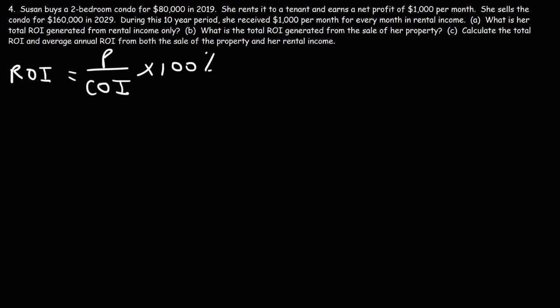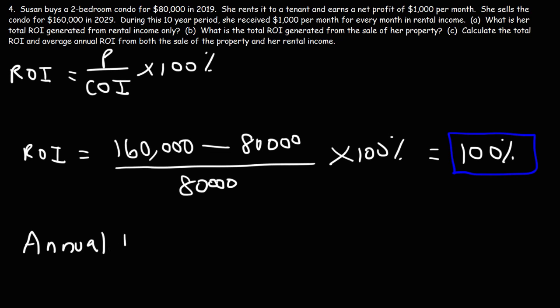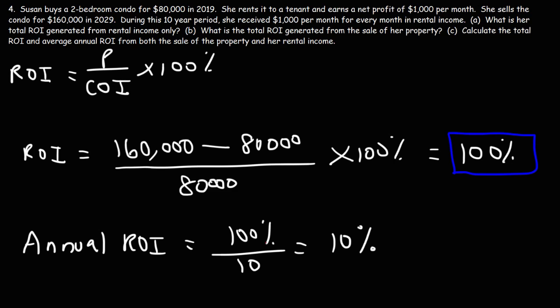For Part B: What is the total ROI generated from the sale of her property? The profit is the current value of $160,000 minus the cost of $80,000, times 100%. Because her condo doubled in value, it increased by 100%. Taking $160,000 minus $80,000 gives $80,000 profit; dividing that by $80,000 and multiplying by 100 gives 100%. So that's the total ROI from the sale of the property. For the average annual ROI, since this was earned over a 10-year period, the value of her property was increasing by 10% per year.